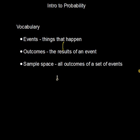A phrase we need to know to understand probability is 'sample space.' Sample space is all the outcomes of a set of events. So if you have several events and you look at all of their outcomes, you would call that the sample space.